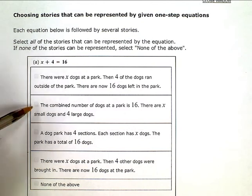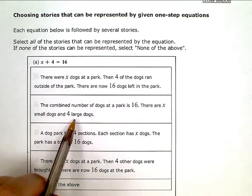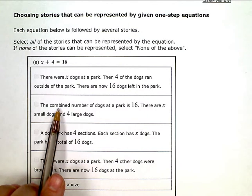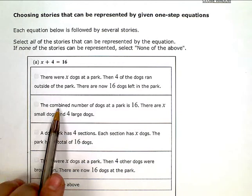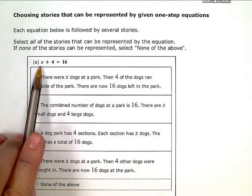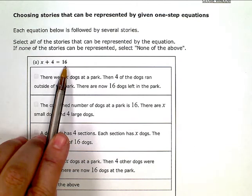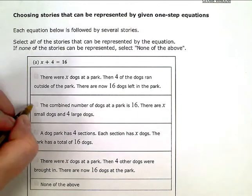The combined number of dogs at a park is 16. There are x small dogs and 4 large dogs. This one works because we're combining 2 types of dogs. Combined is kind of a keyword for addition there. These represent the small dogs combined with the large dogs gives us a total number of dogs of 16. So this one we could check.